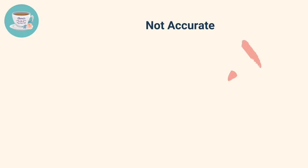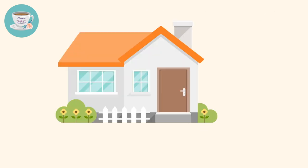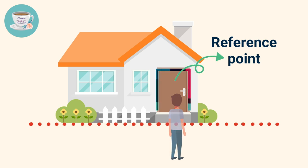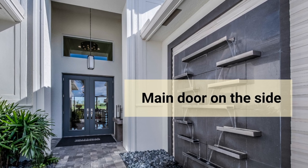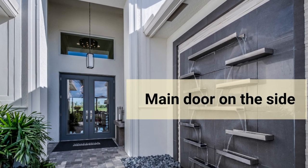A lot of people measure the directions inside the house or with their back to the front door. If you do it this way, the compass reading may not be accurate because it's hard to find a reference point. It's only when you stand outside and look towards your front door that you are able to use the front door as a reference point to ensure you are directly facing the door.